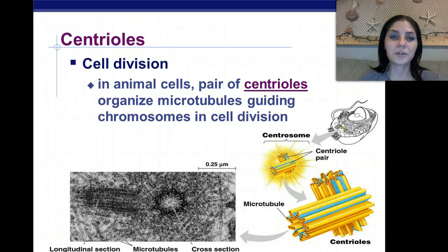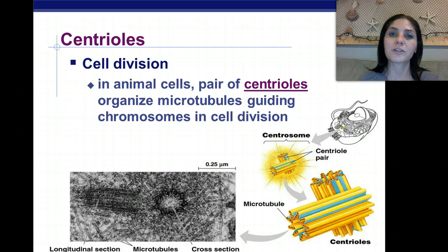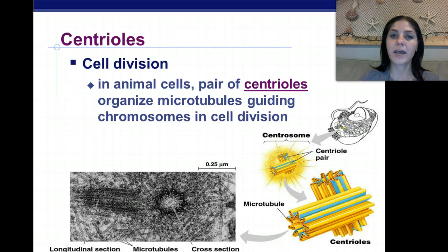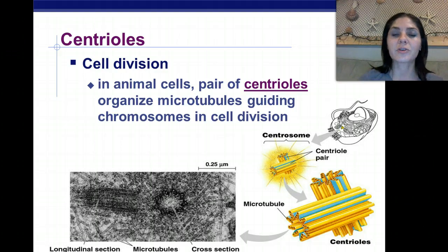So centrioles, which are these little guys that I plucked out of my cell model, serve in the function of cell division. They are only found in animal cells, and we have a pair of them, meaning we have two. They organize microtubules by guiding chromosomes in cell division.